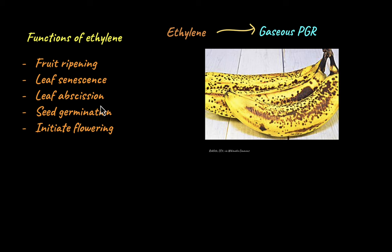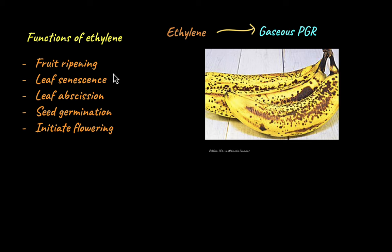Abscission is the term that means falling off of plant parts. Leaf abscission is when old, damaged leaves fall off from the plant because they are no longer photosynthesizing and are just dead weight. Ethylene also promotes the abscission of leaves. Ethylene is also involved in seed germination, growth of the new plant, and initiation of flowering. Fruit ripening, seed germination, and initiation of flowering are plant growth promoting activities, while leaf senescence and leaf abscission are plant growth inhibiting activities. That is why ethylene fits as both a growth promoter and a growth inhibitor.